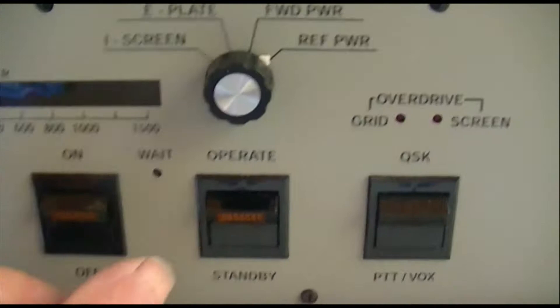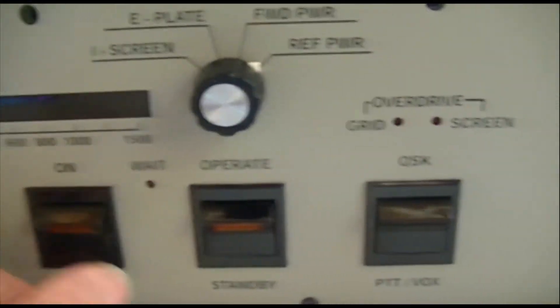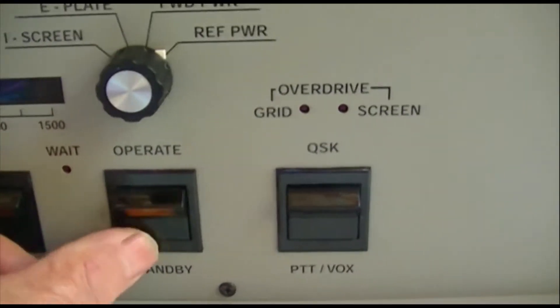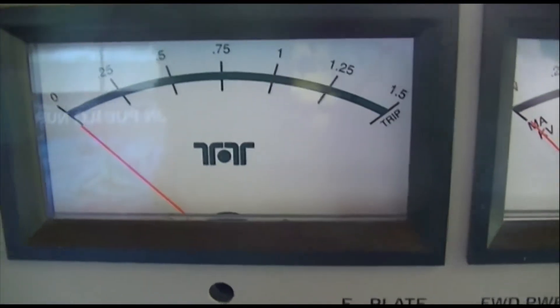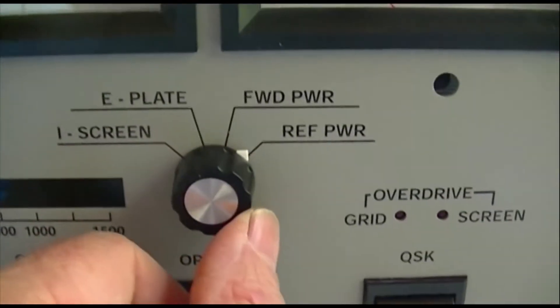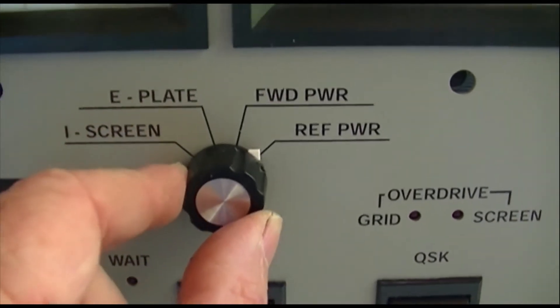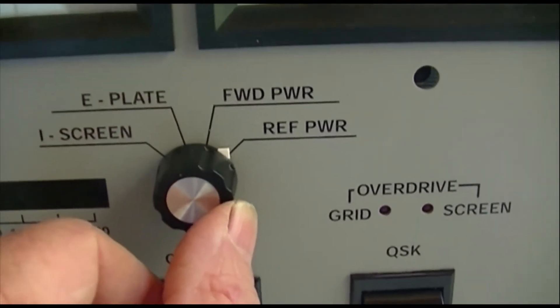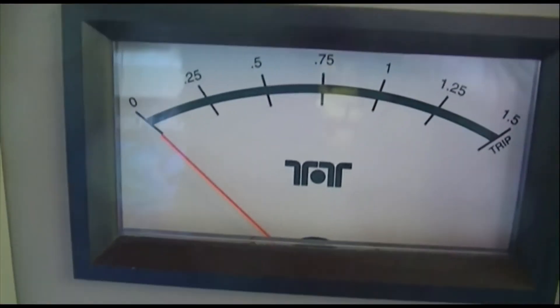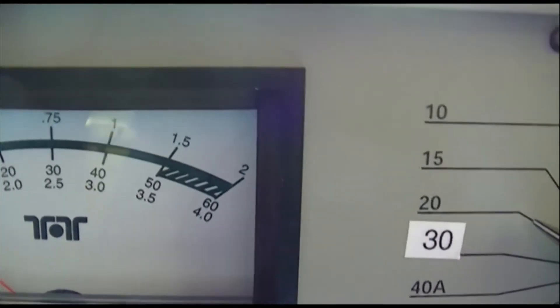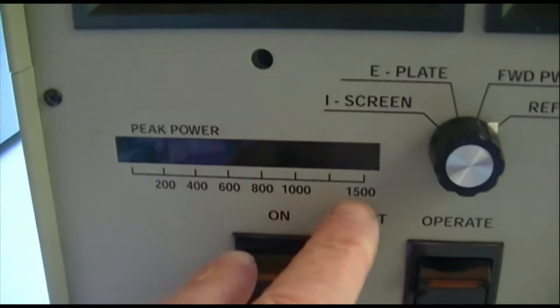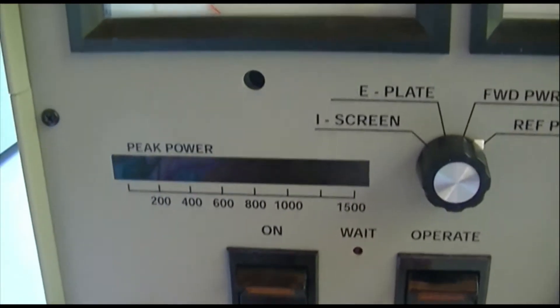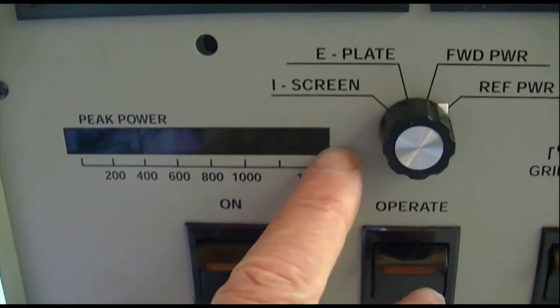The on-off, these are illuminated switches, standby and operate, QSK, push to talk. And here's the metering so you can look at grid current, plate current, forward power, reflected power. There's the meters and they're also giving you a peak power bar graph here.